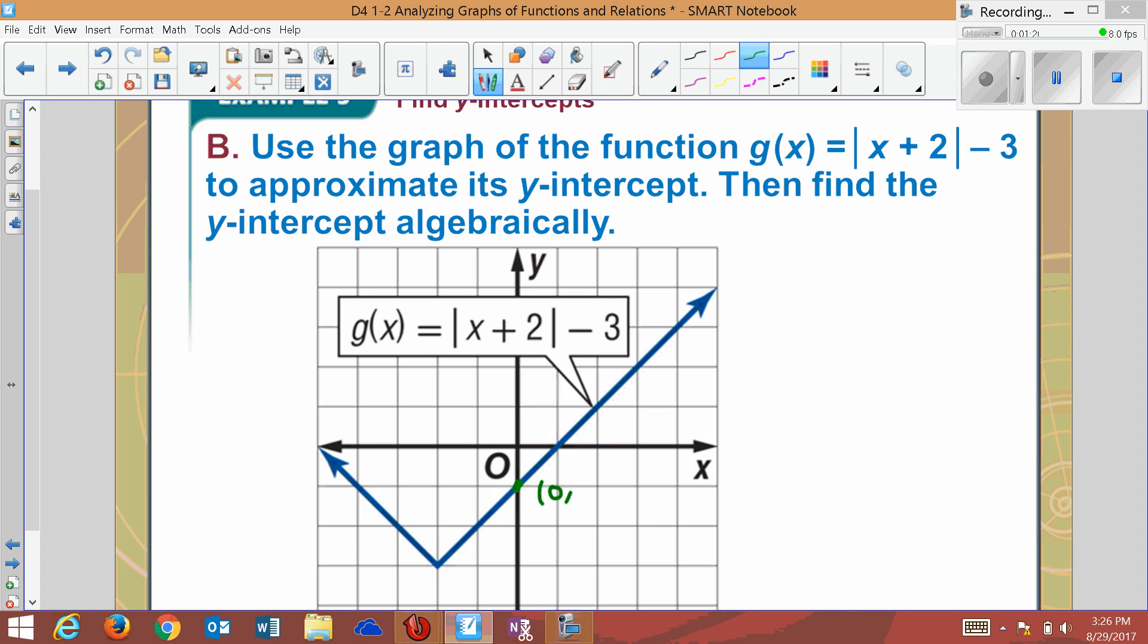That value is 0, 1. Now if I want to do this algebraically, I would type in the x-value of 0. So let's say that g of 0 will equal the absolute value of 0 plus 2 minus 3.